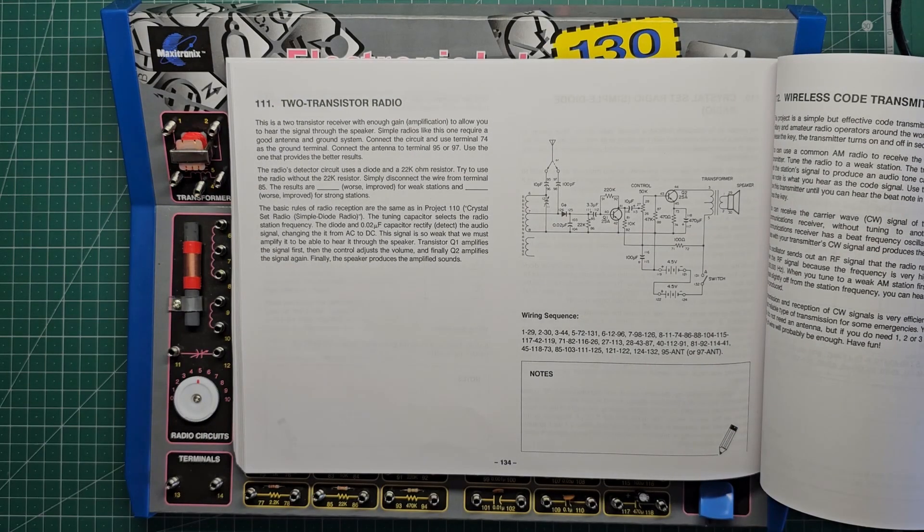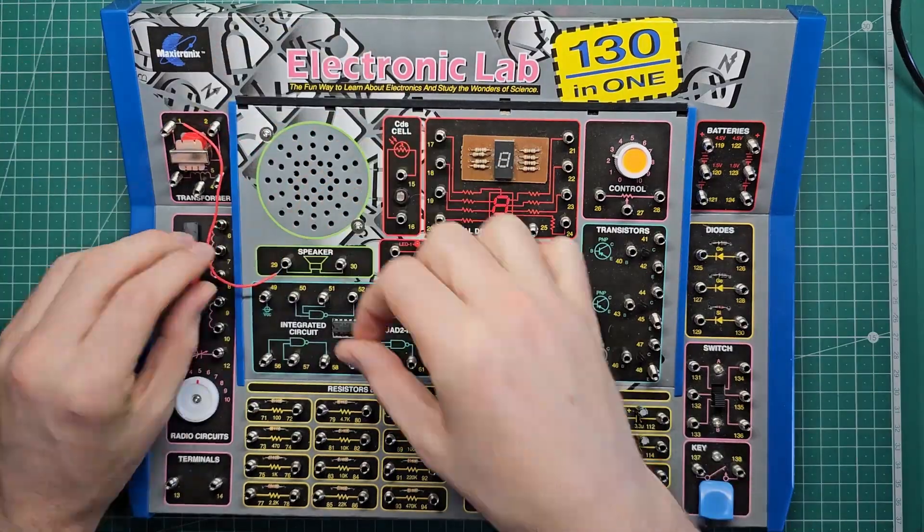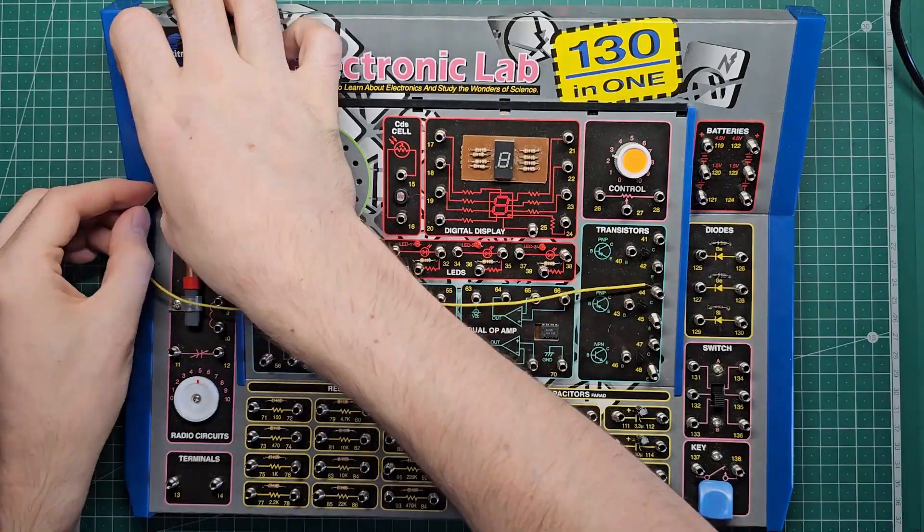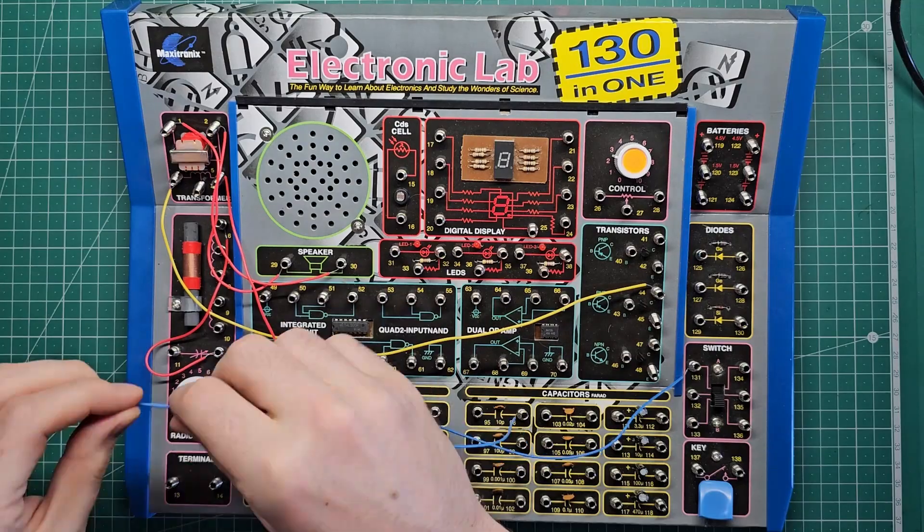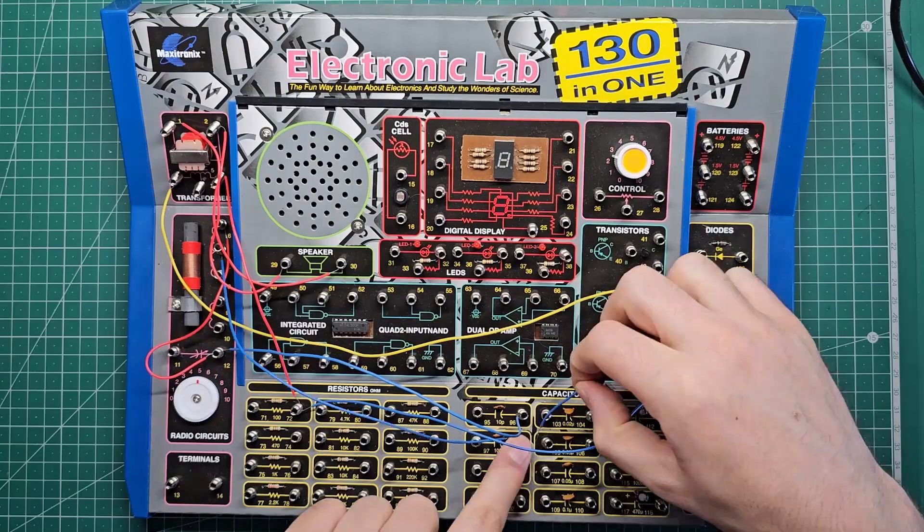Now I've saved the best project for last. Next we're going to put together this two transistor radio circuit, and hopefully we can tune into some local radio stations and actually hear them coming out the speaker. Let's give it a go.